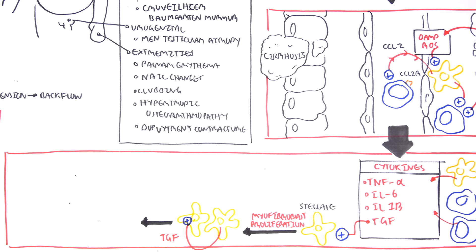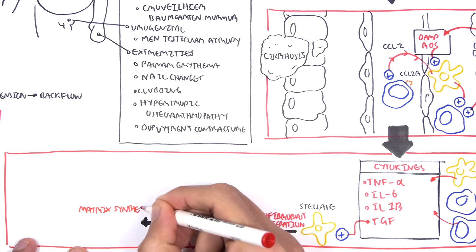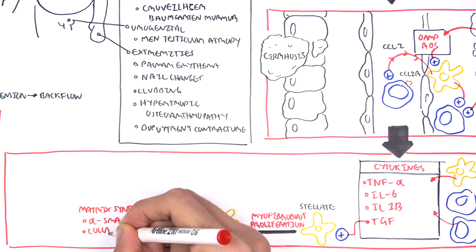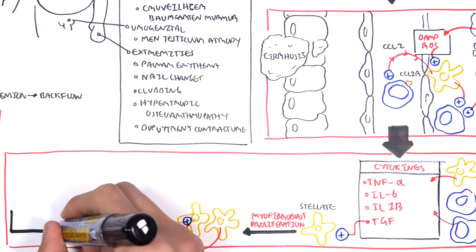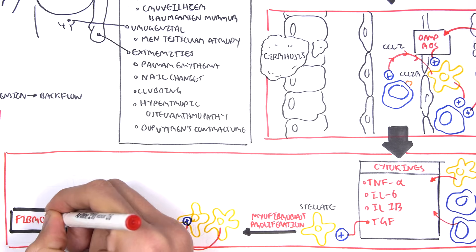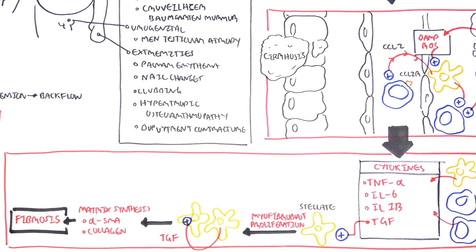These fibroblasts are the ones that produce the matrix, the collagen, which leads to the fibrosis associated with liver cirrhosis. The fibroblasts release the matrix, which causes the fibrosis of the liver.